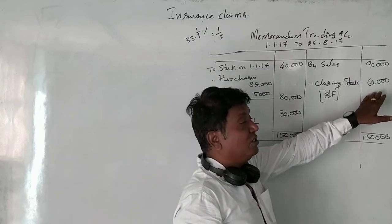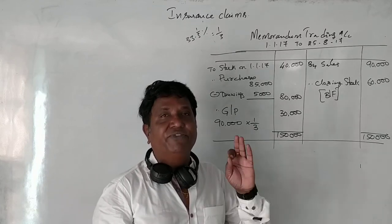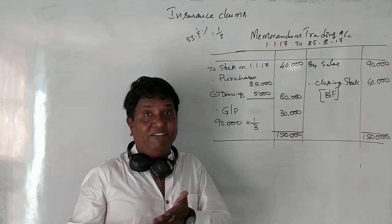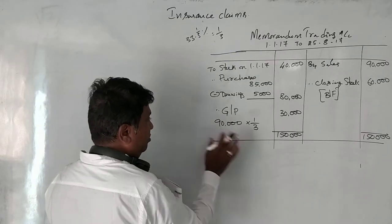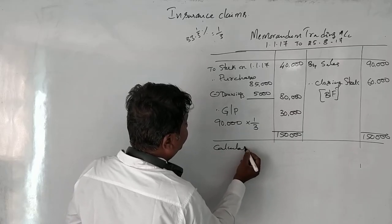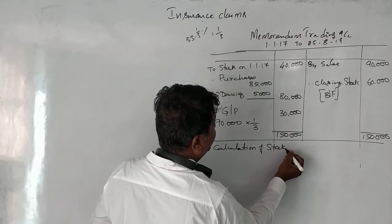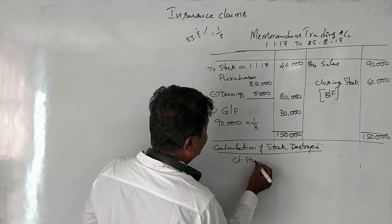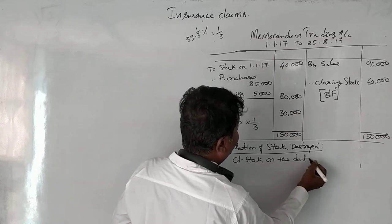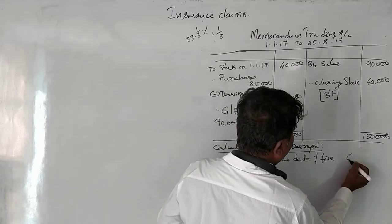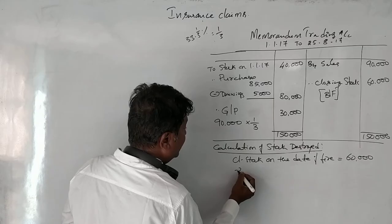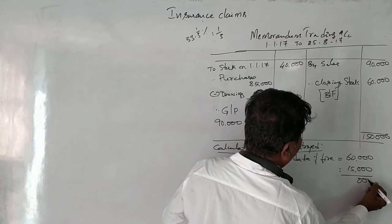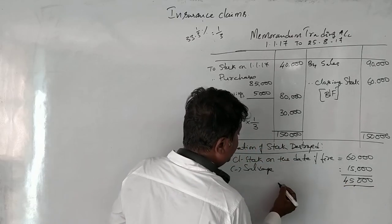The closing stock on the date of fire is ₹60,000. Next, calculation of stock destroyed: closing stock on date of fire is ₹60,000, minus salvage of ₹15,000. Therefore stock destroyed equals ₹45,000.